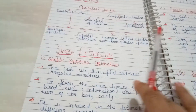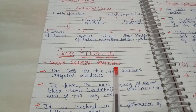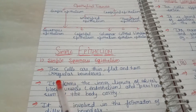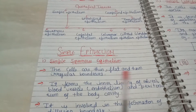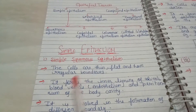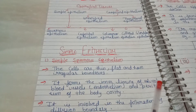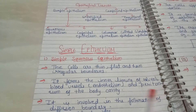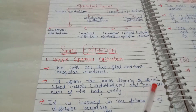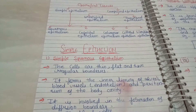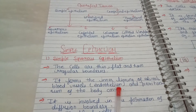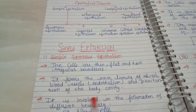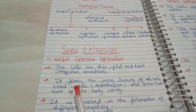Now we discuss about simple epithelium tissue. There is simple squamous epithelium. These cells are thin, flat, and have irregular boundaries. It forms the inner lining of all the blood vessels and the peritoneum of the body cavity, where cells and organs are separated. It is involved in the formation of a diffusion boundary.